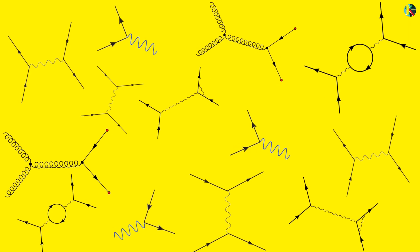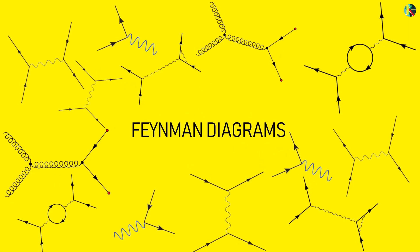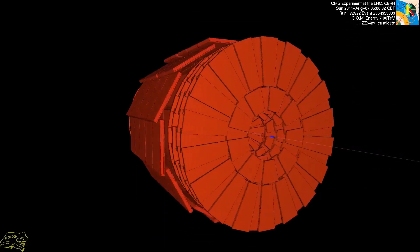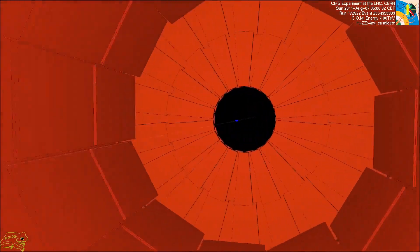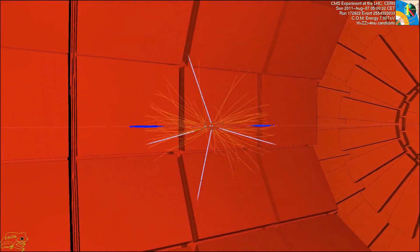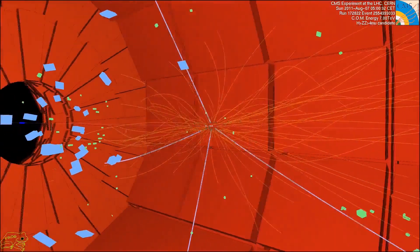The Feynman diagrams revolutionized particle physics by providing a simple system to sort out the infinite possibilities when elementary particles interact. This incredible simplicity provides some stunning insights into the nature of reality.